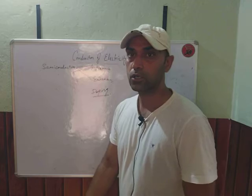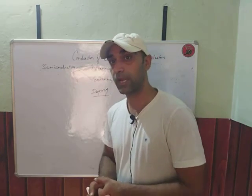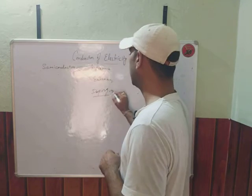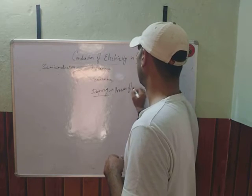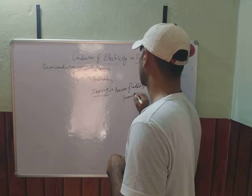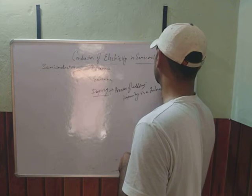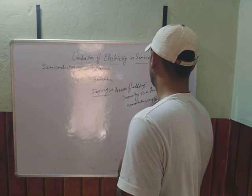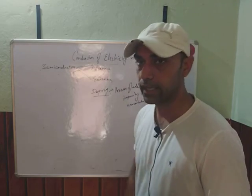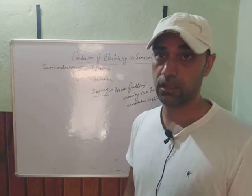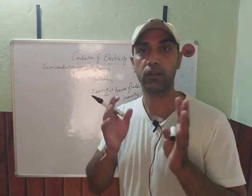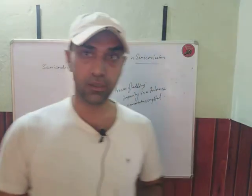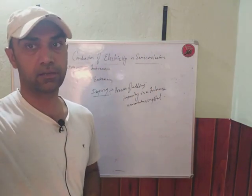The process is known as doping. Doping is the process of adding impurity in a pure intrinsic semiconductor crystal. When you add impurity in an intrinsic semiconductor crystal, it becomes an extrinsic semiconductor, and the process is known as doping. In the next session, we will discuss the extrinsic semiconductor crystal in detail. Thank you.